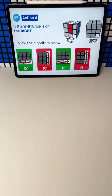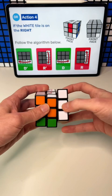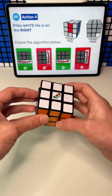This algorithm: d prime r prime d r. If you repeat that six times over, you get back to where you began.